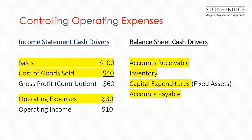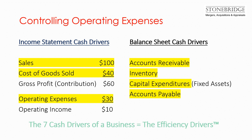On the income statement we have the three primary cash drivers, which are sales, cost of goods sold, and operating expenses. And on the balance sheet, we have receivables, inventory, capital expenditures, and payables. We refer to these as the efficiency drivers.